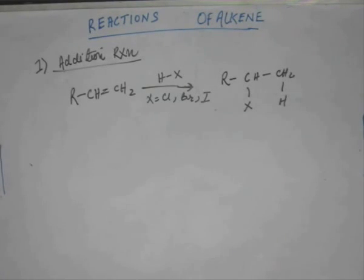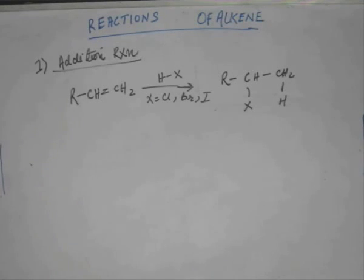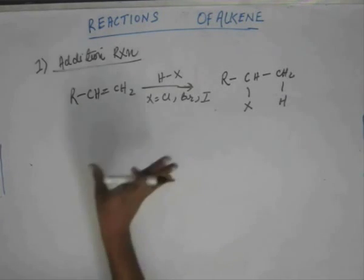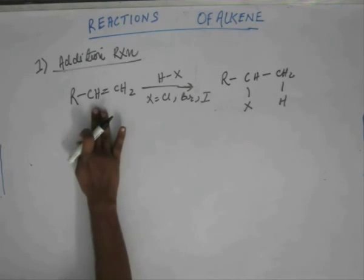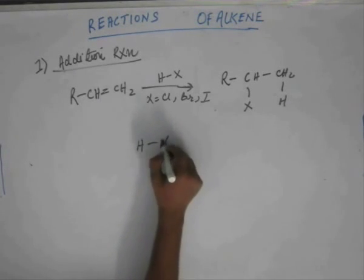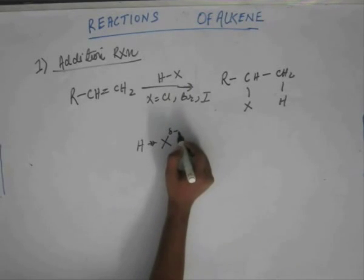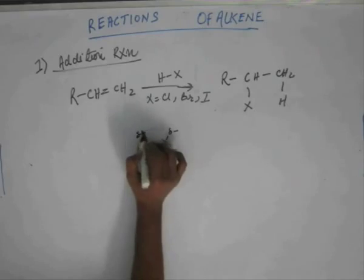Let's think about the mechanism. We have an alkene which is electron rich, and we have a reagent HX — there is nothing else. The alkene is non-polar and will not initiate anything, but HX is a polar molecule. Halogens have high electronegativity and pull electrons from the sigma bond, giving X a partial negative charge (δ−) and hydrogen a partial positive charge (δ+).